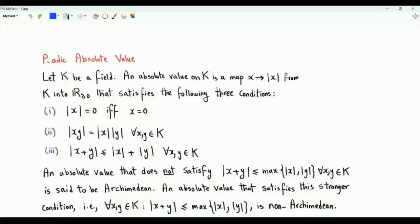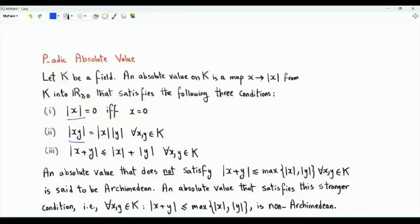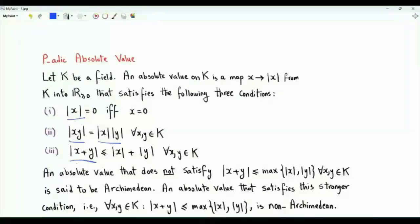An absolute value should satisfy the following three conditions. The absolute value of x, which is an element of the field, is 0 if and only if x is equal to 0. The absolute value of the product is the product of the absolute values. Then we have the triangle inequality: the absolute value of x plus y is less than or equal to the absolute value of x plus the absolute value of y.